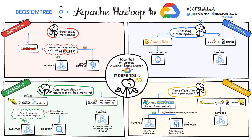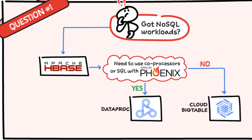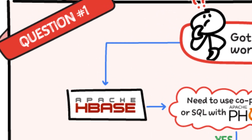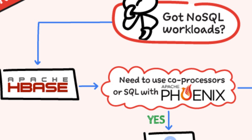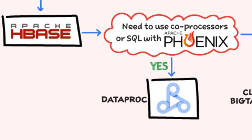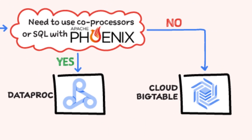First question: are you trying to migrate NoSQL workloads? If you're using HBase, then check if you need to use coprocessors or SQL with Phoenix. In that case, Dataproc is the best option. If not, then Bigtable is a good choice.